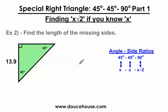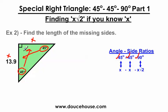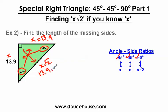Let's do another problem. I'm given one of the sides and I need to find the other two sides. I always like to label the sides opposite these angles x, x, and x square root 2. Opposite this 45-degree angle, I'm going to label this x. Opposite the other 45-degree angle, I'm going to label that side x as well. Opposite the 90-degree angle, I'm going to label x square root 2. By doing this, I now know that x is 13.9, so this x is also going to be 13.9, and then this side is 13.9 square root 2.